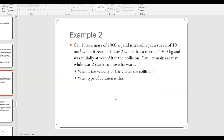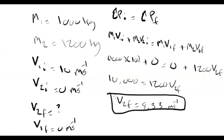The second question asks what type of collision this is. There's no way to answer this other than based on the definitions of the different collision types — unless the problem says the objects stick together, in which case we can infer it's perfectly inelastic. Otherwise, we have to evaluate the kinetic energy of the system before and after the collision. If they're equal, it's elastic; if initial KE is greater than final KE, it's inelastic.